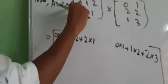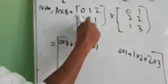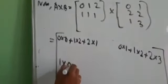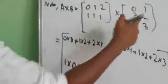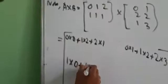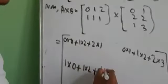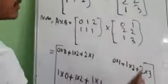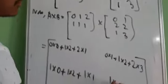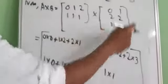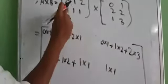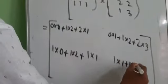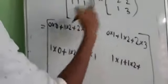Next, the second row into the first column: 1×0, plus 1×2, plus 1×1. Then the second row into the second column: 1×1, plus 1×2, plus 1×3.